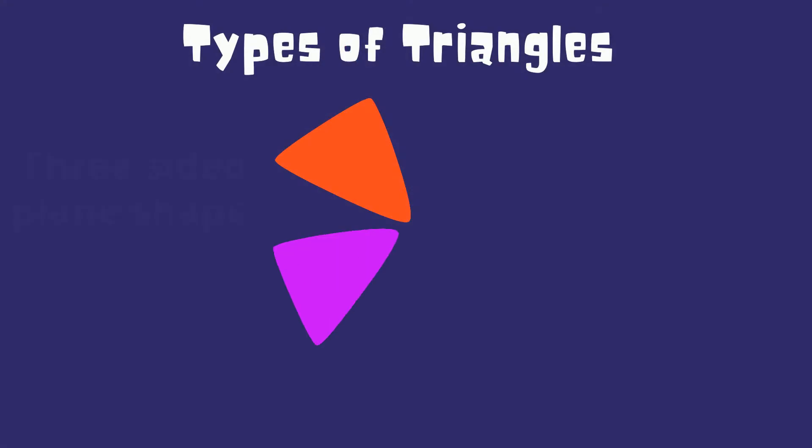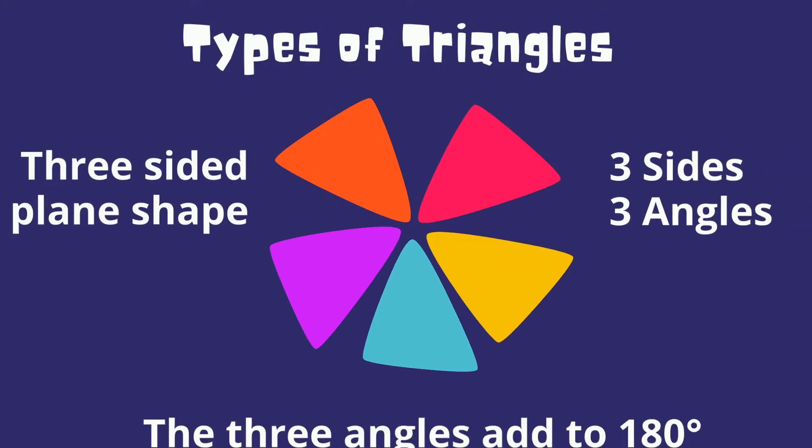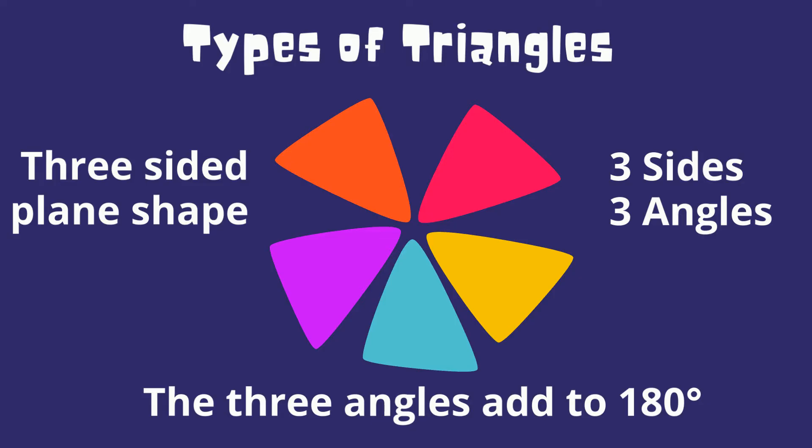A triangle is a three sided plane figure with three sides and three angles. The sum of the three angles always add up to 180 degrees.